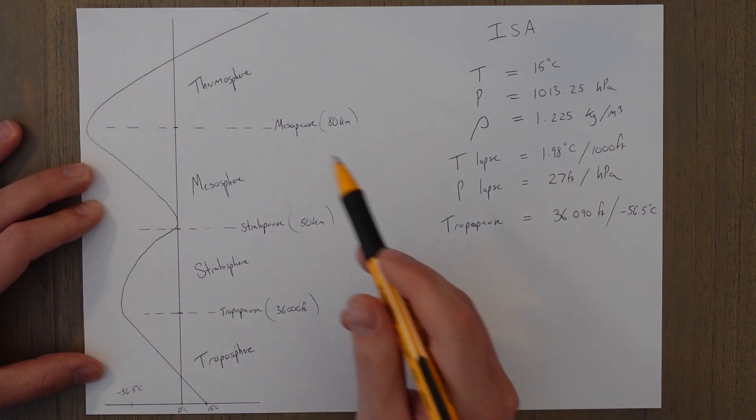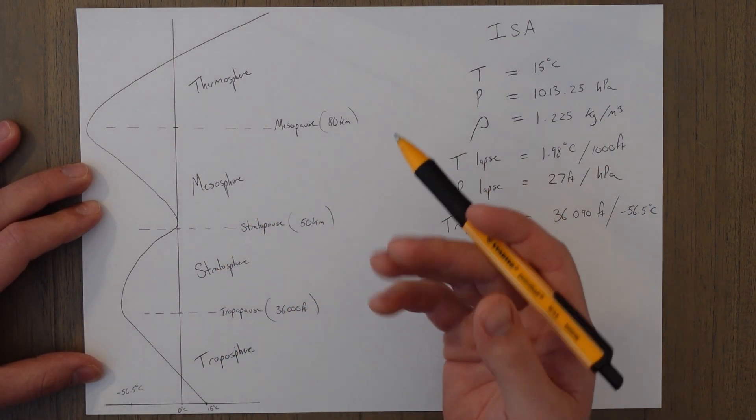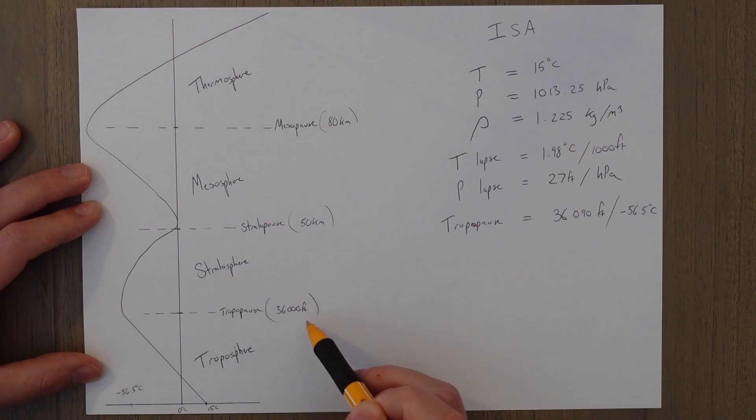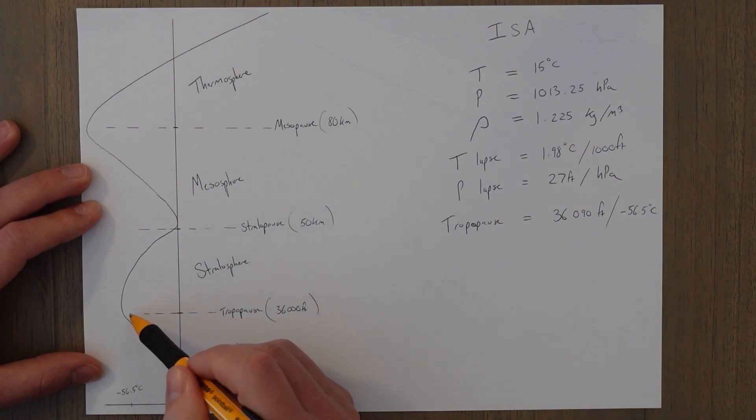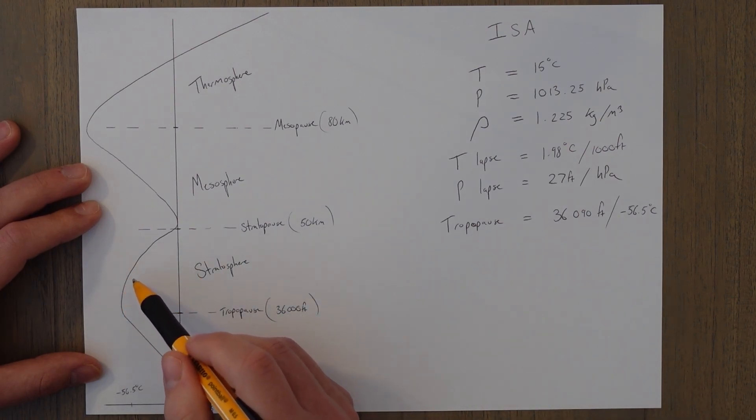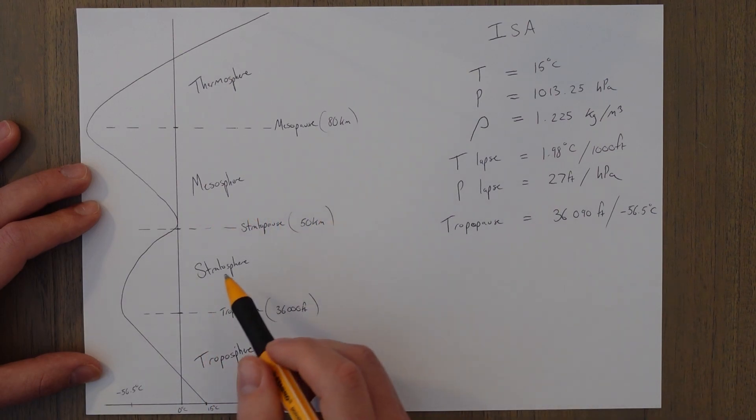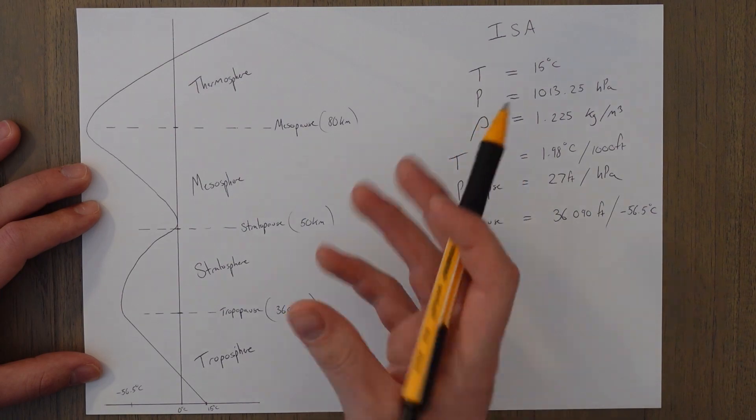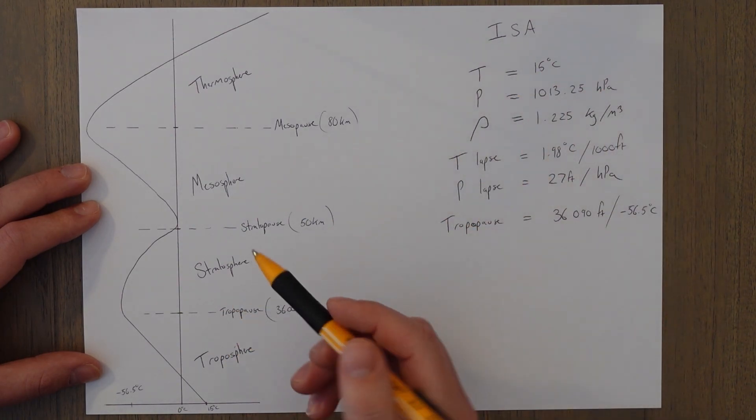They're mainly defined about what happens to the temperature. So in the troposphere the temperature reduces with altitude until reaching the tropopause, which is normally located at 36,000 feet. Then the temperature will either stay constant or start to rise slightly. That's because in the stratosphere we have ozone, which absorbs heat and then radiates it back out, warming the surrounding air.